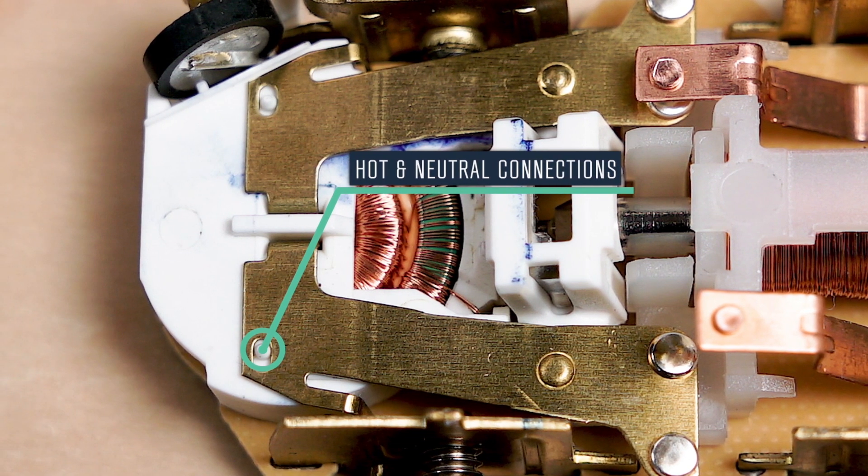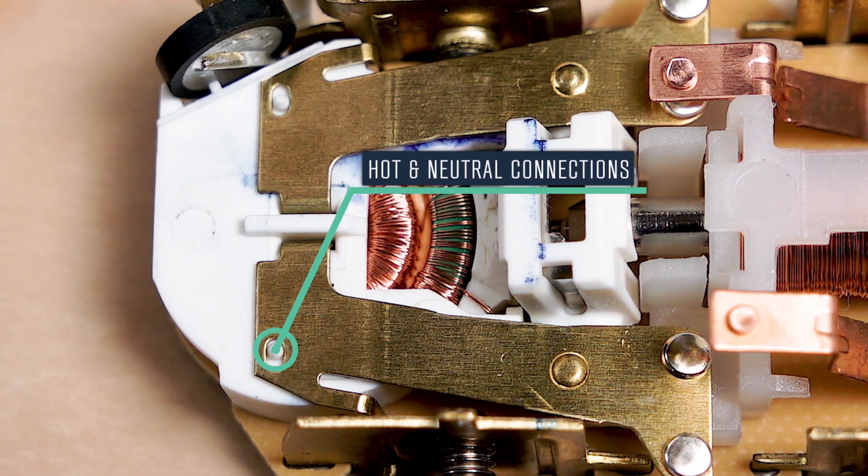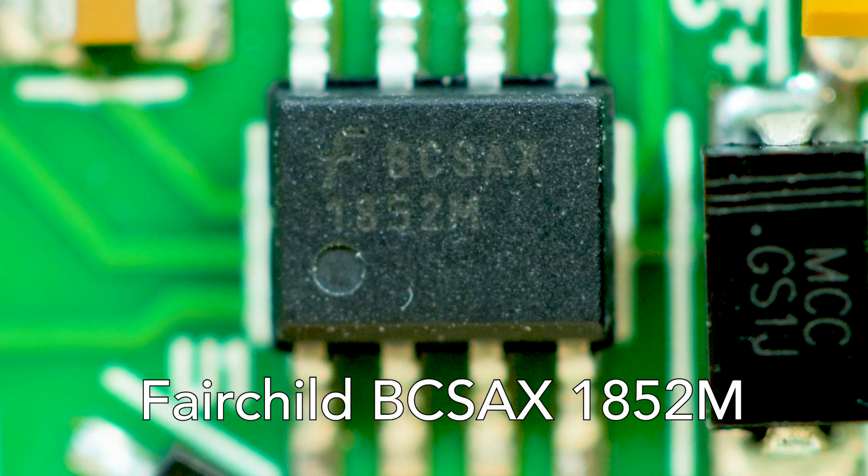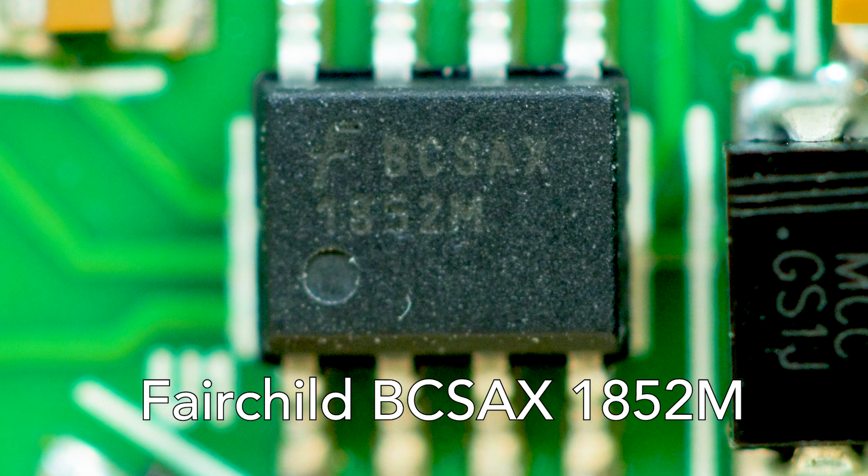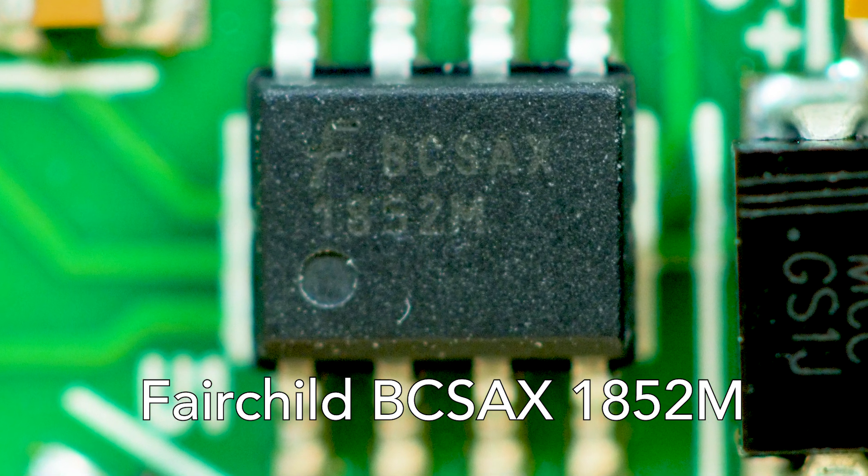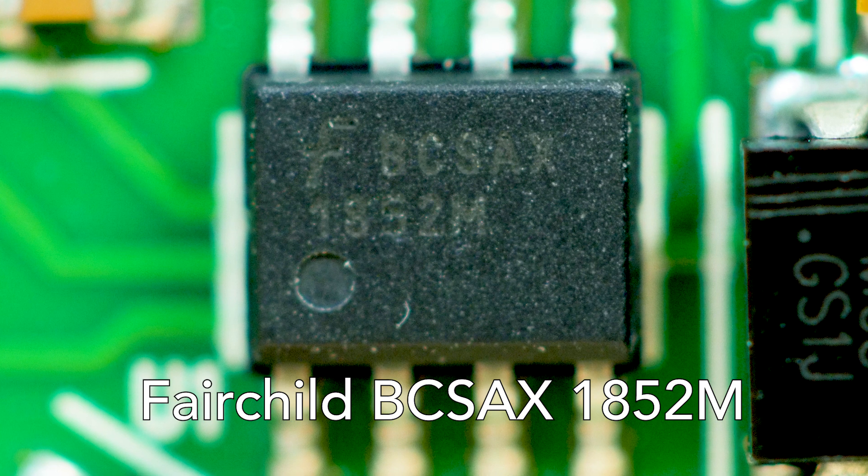GFCI makers can use several methods to detect the ground and neutral current. The Fairchild chip uses a scheme which makes use of the definition of fault current resistance as spelled out in UL 943, the U.S. standard for ground fault circuit interrupters.